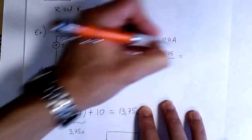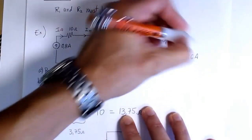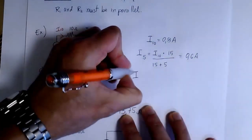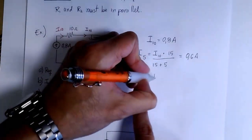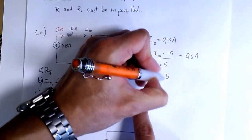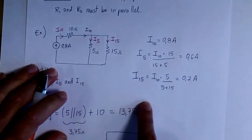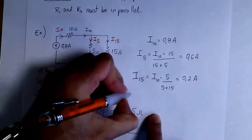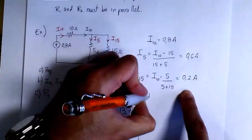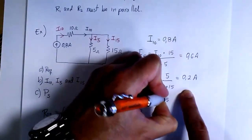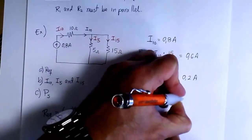We get I5 equals 0.6 amps. Similarly, applying the same principle to find I15, we take the total current I10, multiply by the other resistor 5, and divide by the summation, and we get I15 equals 0.2 amps. We can verify this with Kirchhoff's current law: I5 plus I15 must equal I10, and indeed 0.6 plus 0.2 equals 0.8 amps.